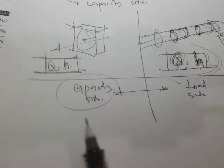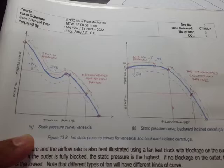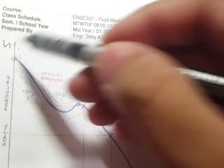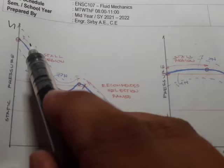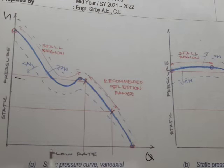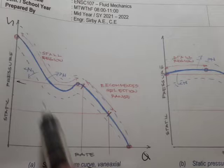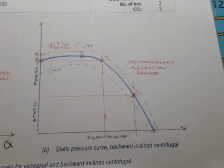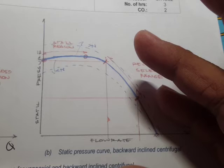A fan performance curve is basically a graphical representation of the performance of a specific fan. Different fans have different performance curves. For example, a static pressure curve for vane-axial fans looks different from a static pressure curve for backward-inclined centrifugal fans. The x-axis is flow rate Q and the y-axis is static pressure H.